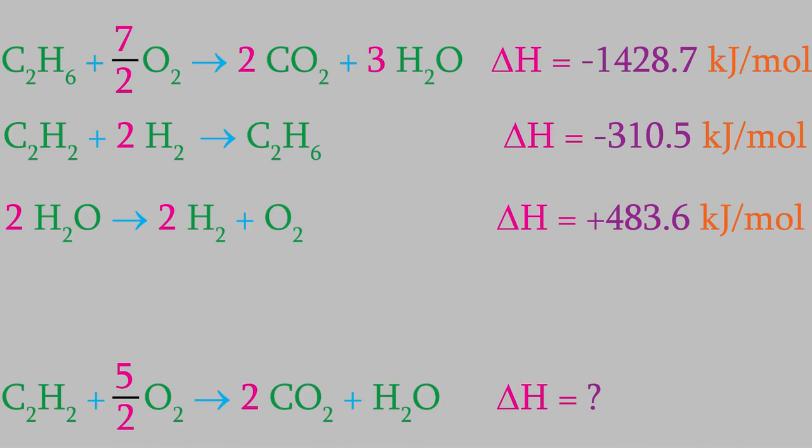Now we have two waters on the left in reaction three and three on the right in reaction one — the two cancel, leaving one water on the right, which is exactly what we want. We've now fixed acetylene, carbon dioxide, and water. We can't change any of the three reactions further without disrupting those compounds. So if we've done everything correctly, the three reactions should now add up to the overall reaction we want. The oxygens should also work out automatically.